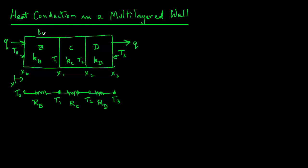The individual wall thicknesses are LB, LC, and LD. Recall that the thermal resistance for a single layer is R equals L over KA. That is what we obtained in the other module.